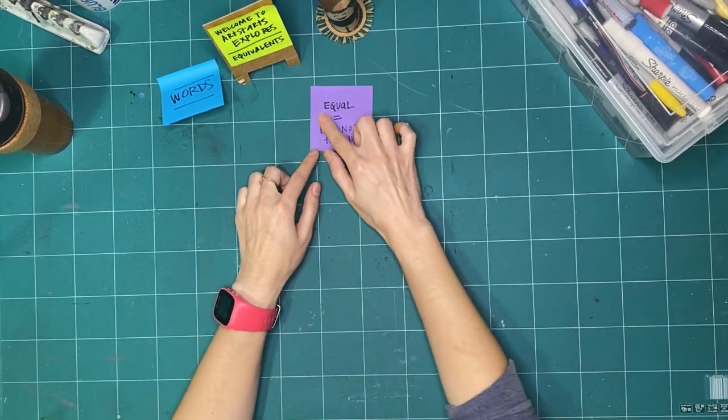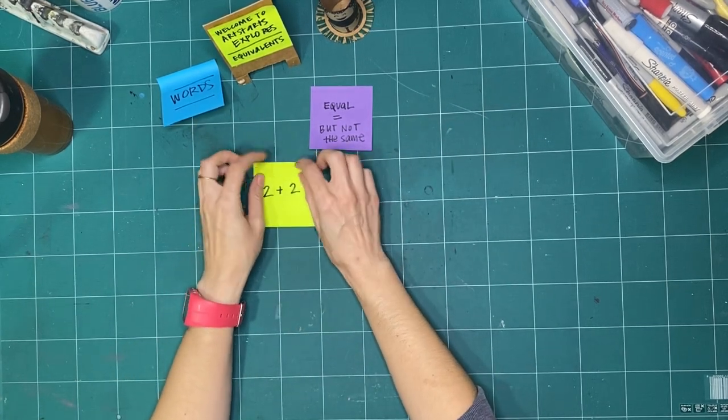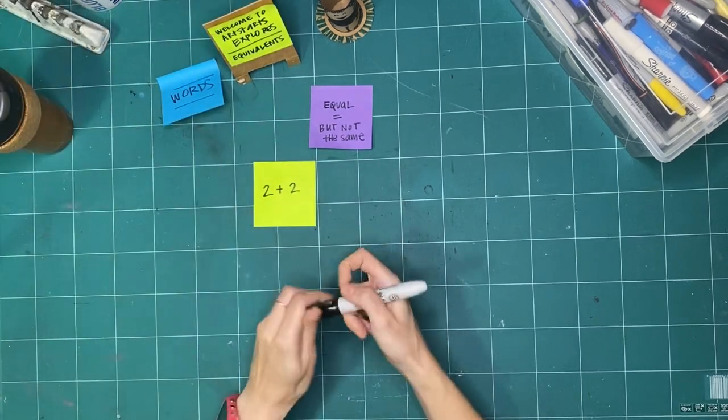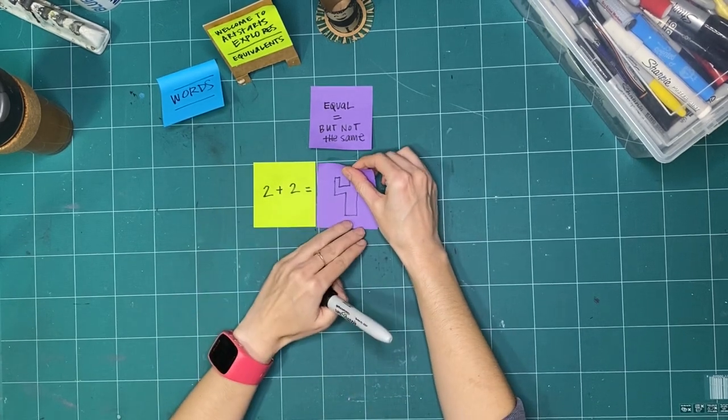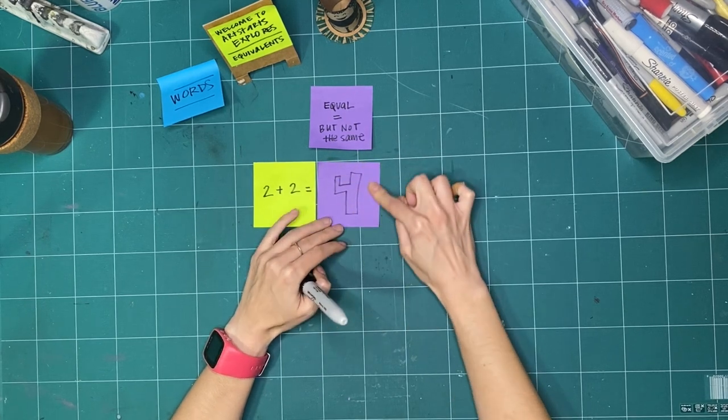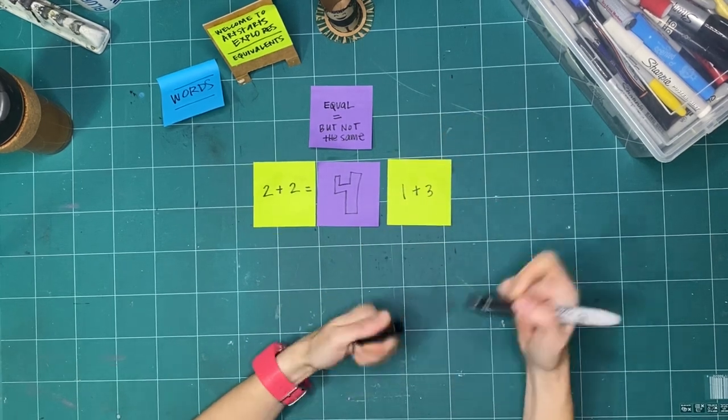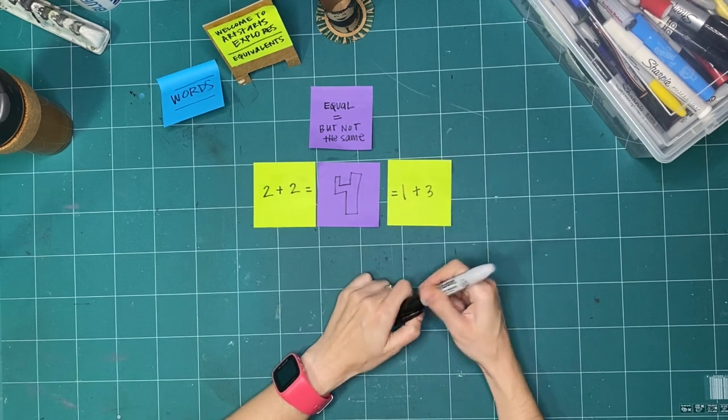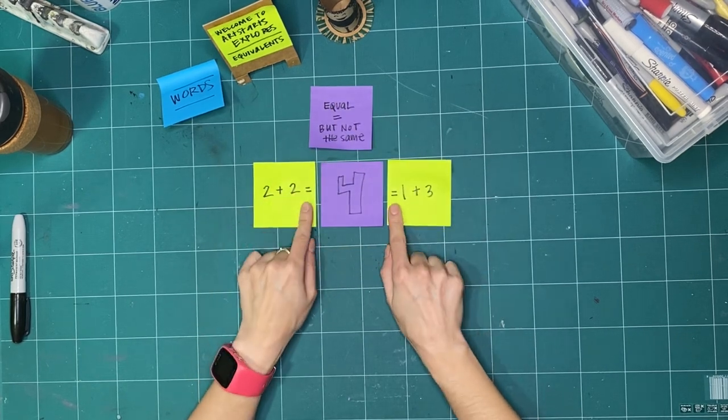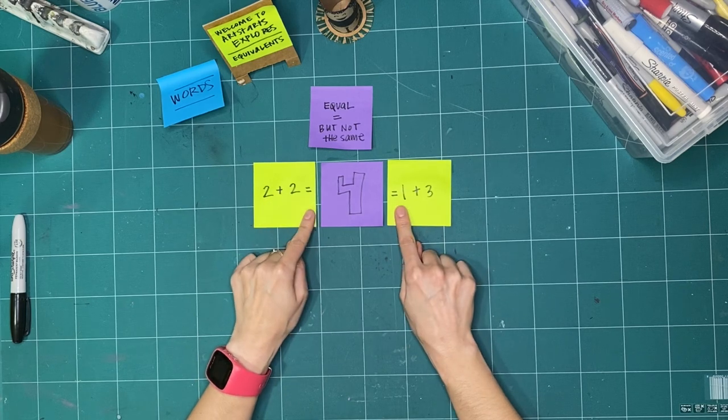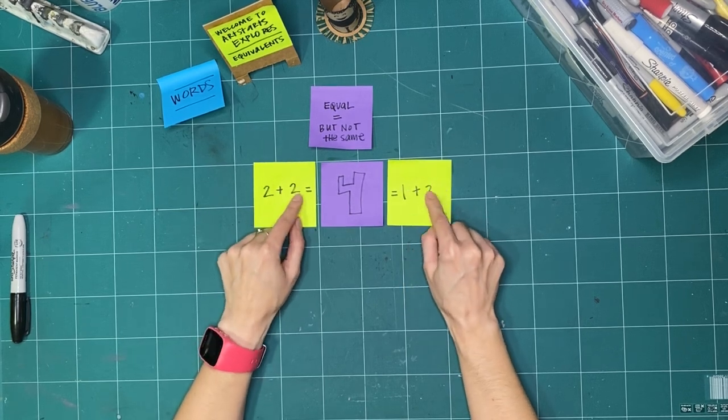And so you probably have seen two plus two before. And if you have learned any math, you know that the answer is four. But one plus three is also equal to four. And so that's what I mean when I'm talking about equals, but they're not the same. The marks aren't the same. The group isn't the same.